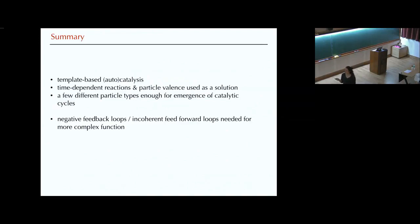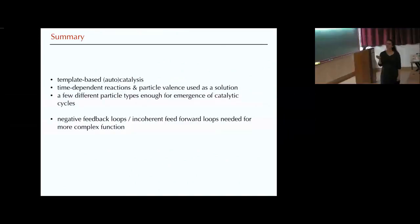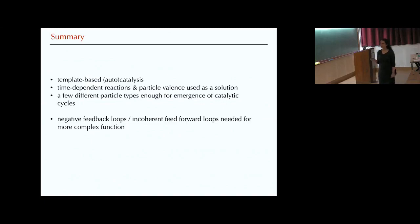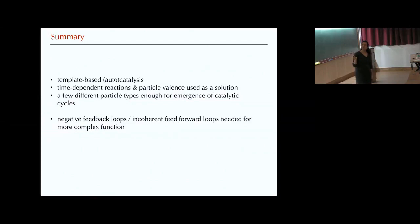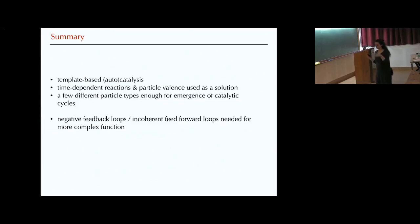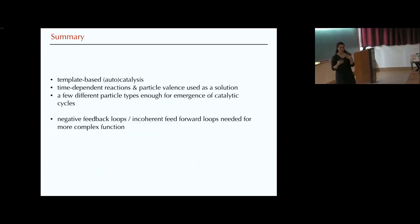So to summarize, we talked about template-based catalysis and autocatalysis. The new ingredients we needed were particle valence control and time-dependent reactions. The surprising thing in these catalytic cycles is that only a few particle types were enough for the emergence of these cycles. What I called adaptation is just first attempts and thoughts — we're playing with the available elements in the matrix and seeing what can happen. Basically, if you want to make something adapt, you need to implement some sort of feedback loops that allow us to have these complex functions.